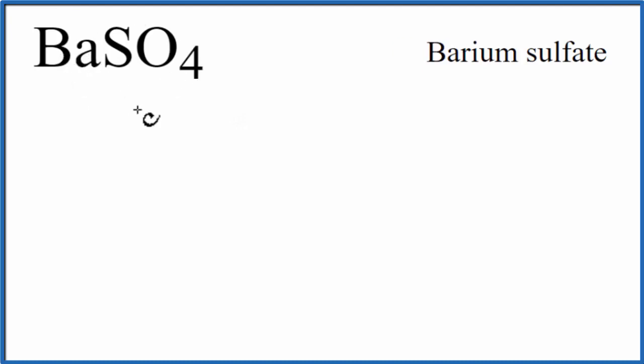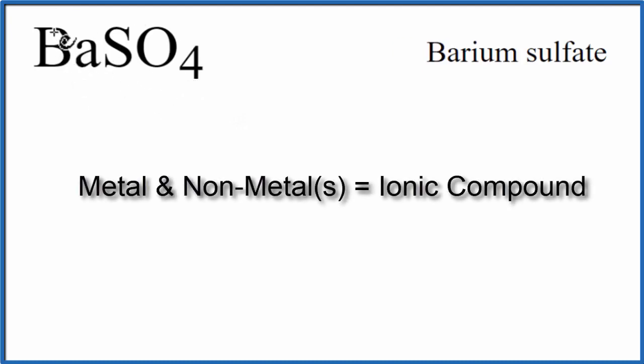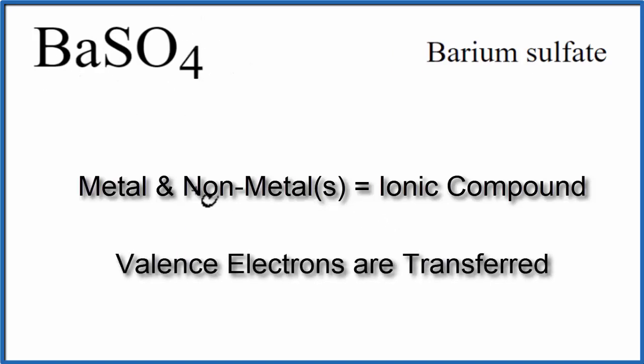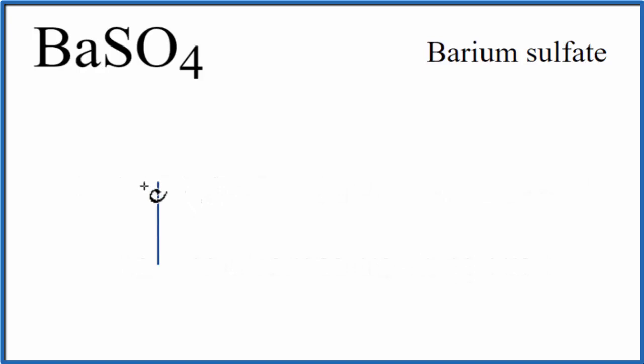When we have a metal and non-metals, that's an ionic compound, and the metal is going to transfer valence electrons to the non-metals. So to write the Lewis structure for BaSO4, we write Ba and then add the sulfate ion right next to it.